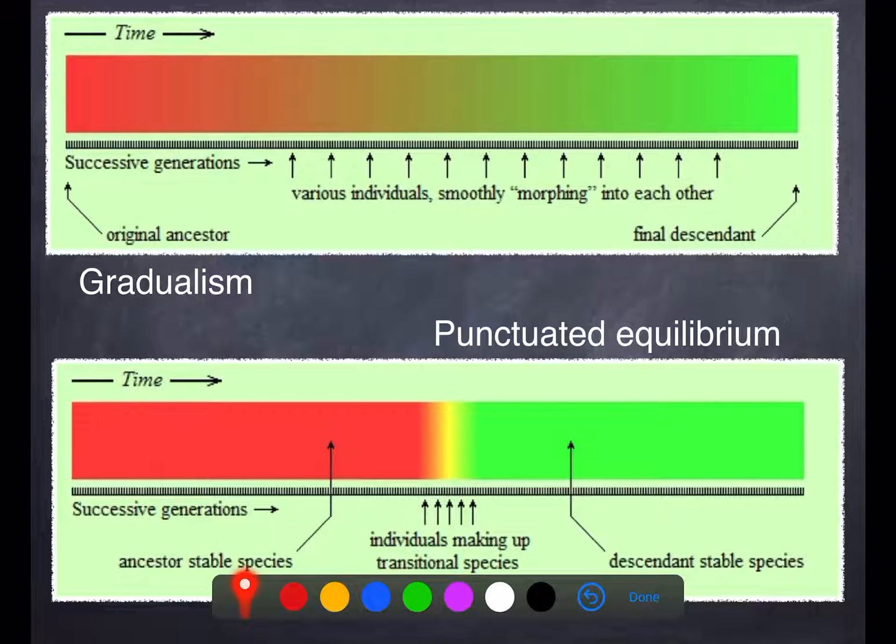Punctuated equilibrium states that things remain unchanged for very long periods of time, followed by a very short period of time in which there is rapid change. You can see all these little arrows here, rapid change, followed by long periods again where there is no change.